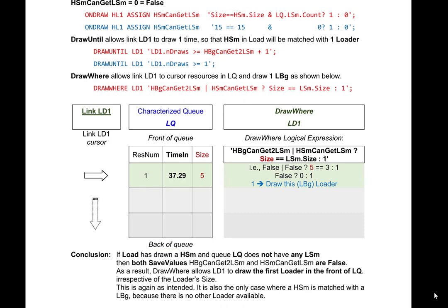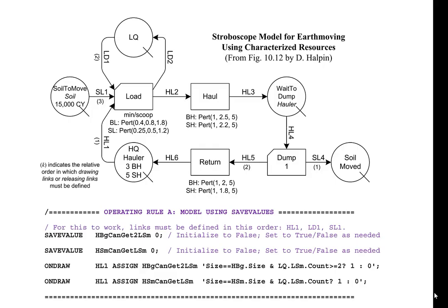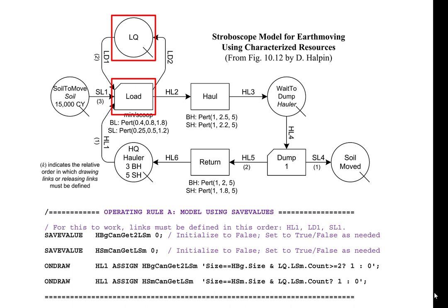In conclusion, if load has drawn a small hauler and QLQ does not have any small loaders, then both save values are false, so draw where allows LD1 to draw the first loader regardless of size. This is the only case where a small hauler is matched with a big loader, because there is no other loader available. To summarize, when a new instance of activity load is created, it first draws a hauler from QHQ through link HL1, then draws matching loader(s) from QLQ, then draws soil through link SL1.